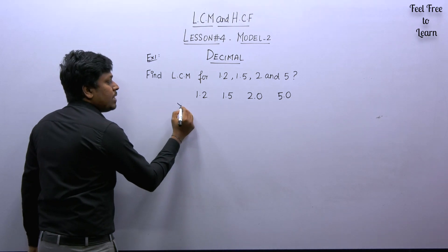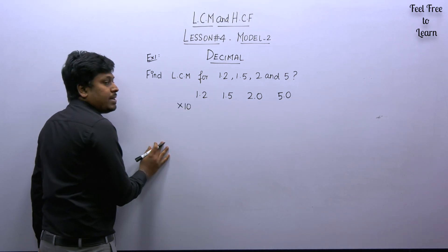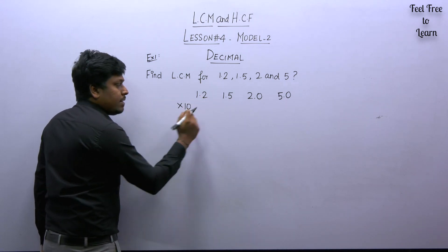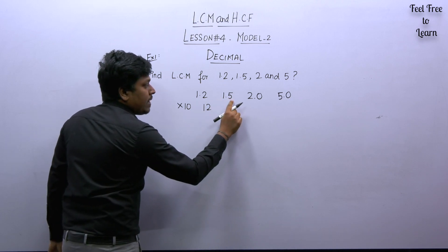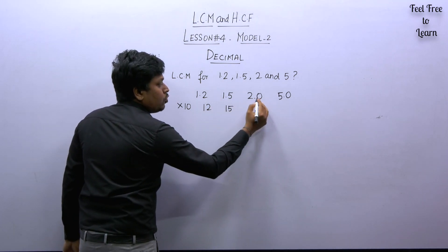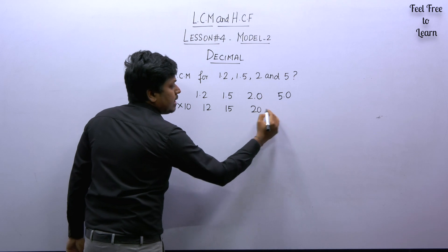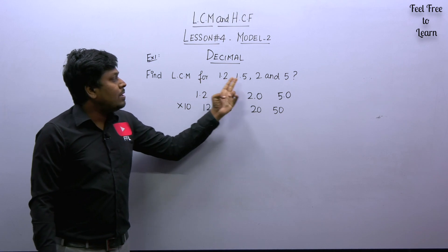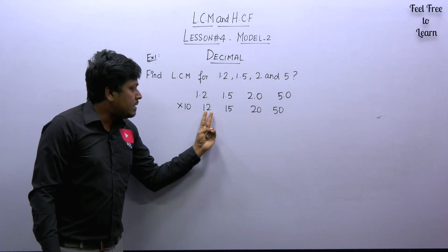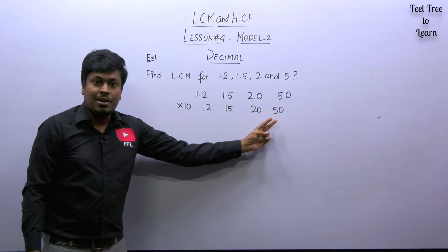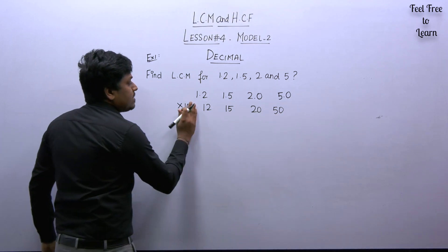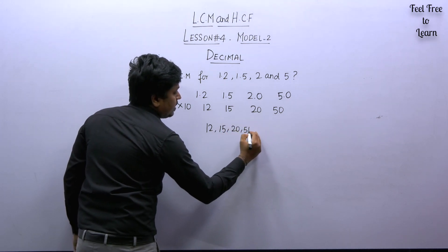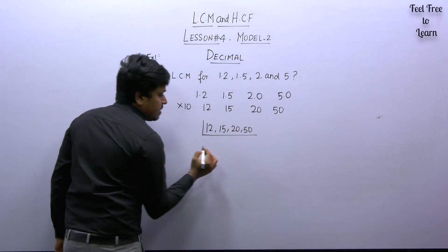The next step is to multiply all values by 10 in order to remove the decimal points. If you multiply 1.2 by 10, the result is 12. 1.5 into 10 is 15. 2.0 into 10 is 20. 5.0 into 10 is 50. We have now converted all the decimal values into integers. Now find the LCM for 12, 15, 20, and 50.